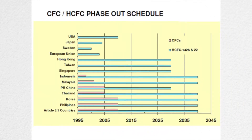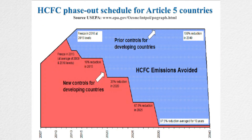In most developed countries, HCFC is banned now, while in some developing countries like China, it can still be used until 2030. Indonesia can use it until 2040. But many countries are carrying out new plans to speed up the phasing-out schedule of HCFCs.